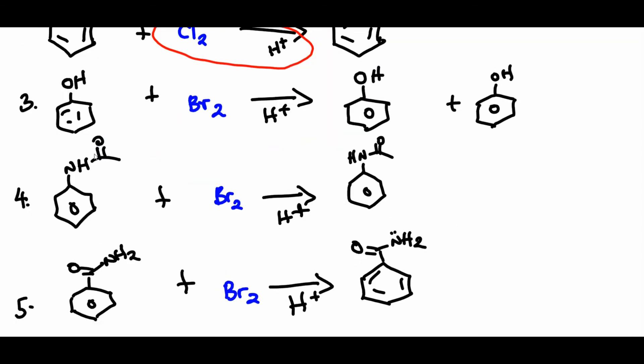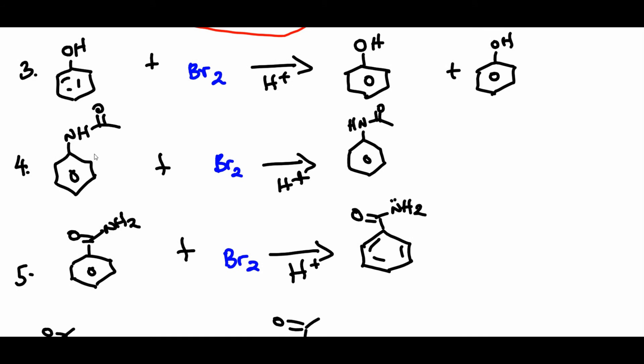Next question. Here you already have a substituent on the ring. It has a lone pair sitting on the oxygen bonded directly to the ring, so this can resonate inside. That makes this OH an electron donating group. It's gonna direct the incoming electrophile ortho or para position. So the electrophile is Br+, so it should end up also here, ortho there, or para there. These two orthos are the same, the molecule is symmetrical, so we either substitute there or here which is para position.